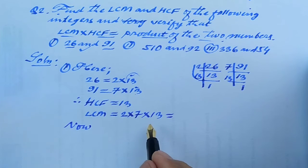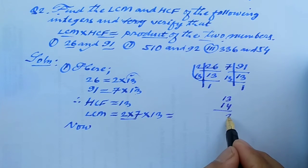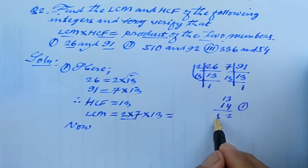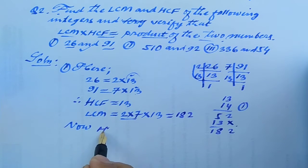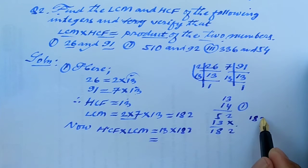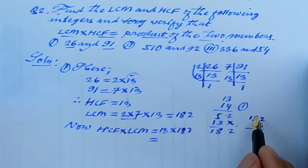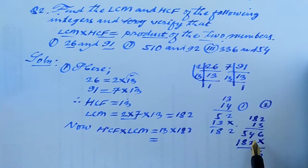Now let us calculate the LCM: 2 into 7 into 13 equals 14 into 13 equals 182. So LCM is 182 and HCF is 13. Now let us verify: HCF into LCM equals 13 into 182. Multiplying: 13 into 182 gives 2,366.